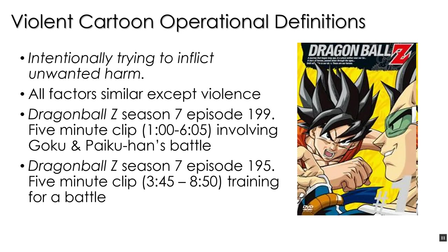Everything must be the same except for the level of violence. It's important that the control condition — the five-minute clip of training for a battle — has just as much motion or activity as the experimental clip. You could not have a clip of characters sitting around talking, because that would introduce another difference between the control and experimental conditions. We have to keep everything exactly the same between the two conditions except for the independent variable, which in this case is violence.